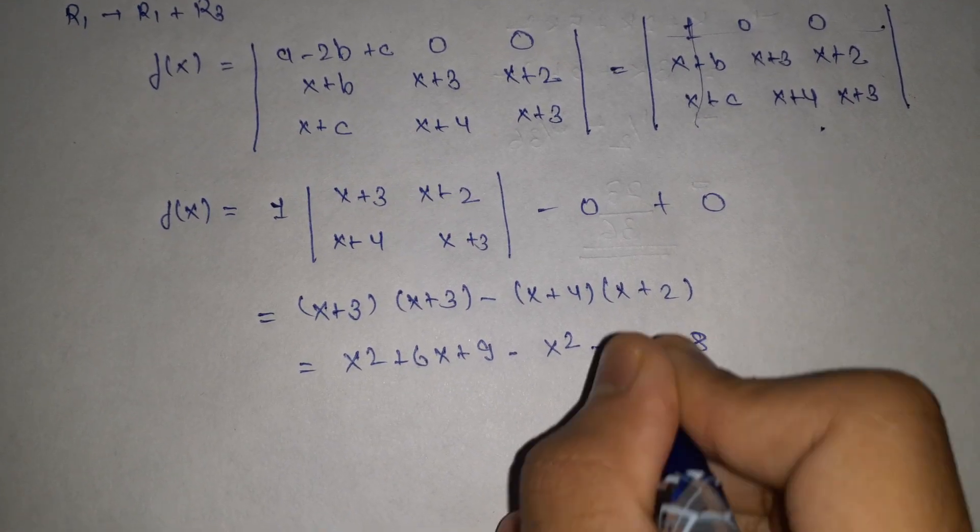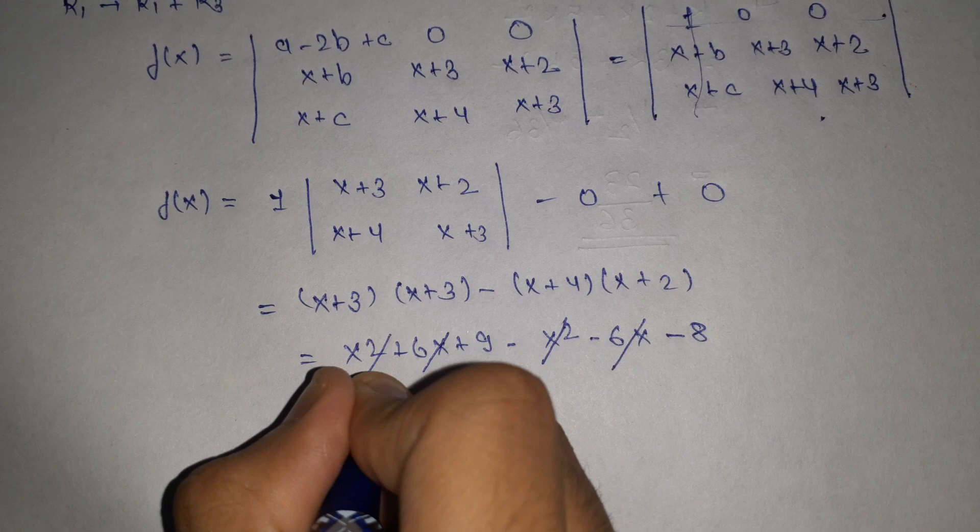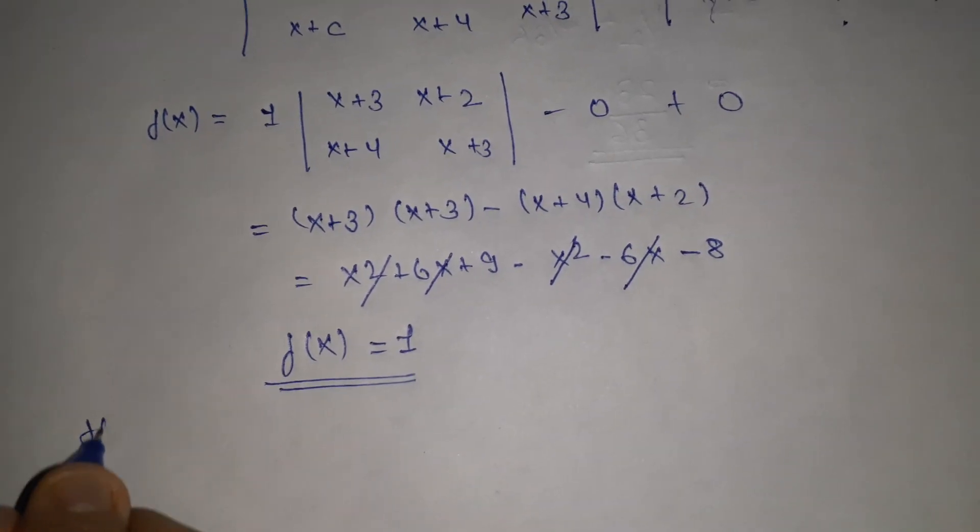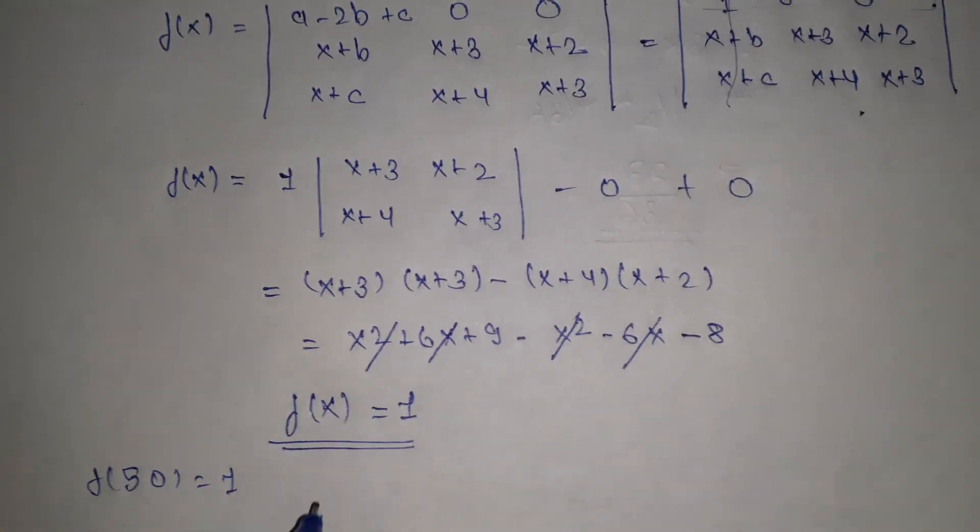So here it comes x squared plus 6x plus 9 minus x squared minus 6x minus 8. Therefore f(x) is a constant function with value 1.